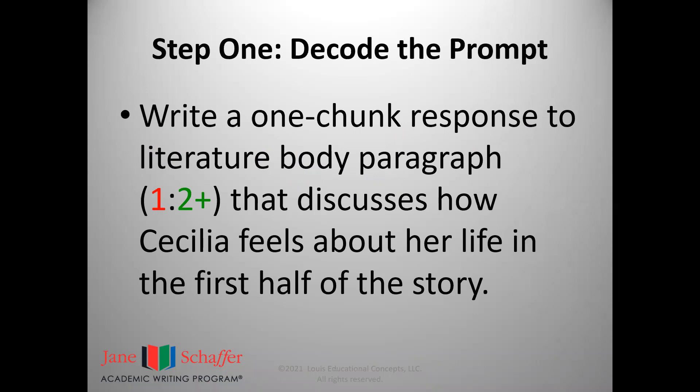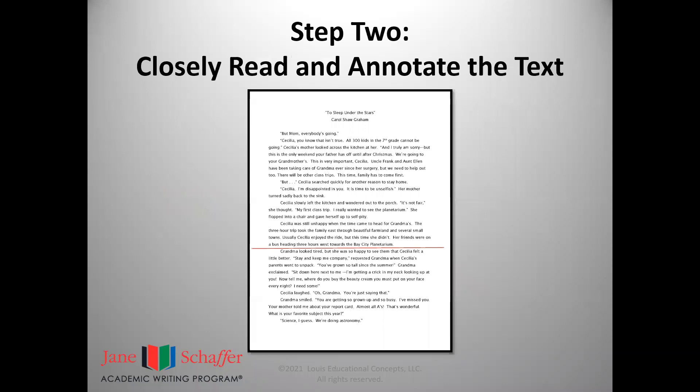We begin teaching the process by making sure students realize the importance of understanding a writing prompt. Students must know their task. We call this skill decoding the prompt. Once students understand their teachers' expectations, the next step in the sequence is for students to read a text closely and process the information through annotation.